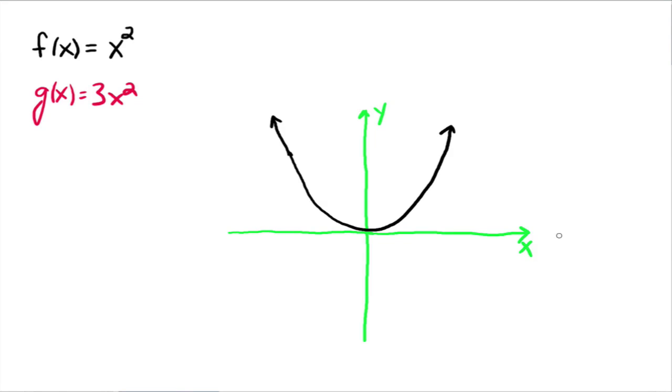If you do a little t-chart, you would have 0, 0, and then when x is 1, you would be up here at 3. When x is negative 1, you'd be up here at 3. When x is 2, you'd be up here at 12. When x is negative 2, you'd be up here at 12.